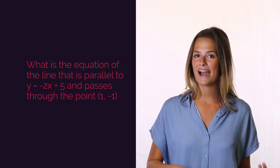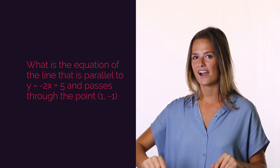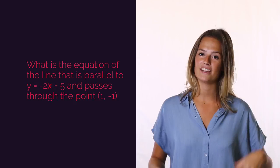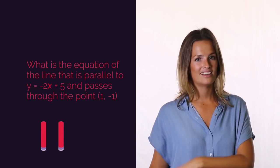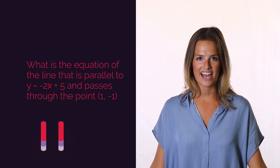Your turn now. What is the equation of the line that is parallel to y equals negative 2x plus 5 and passes through the point 1 negative 1? Pause the video, work out the answer, and click play when you're ready to check.